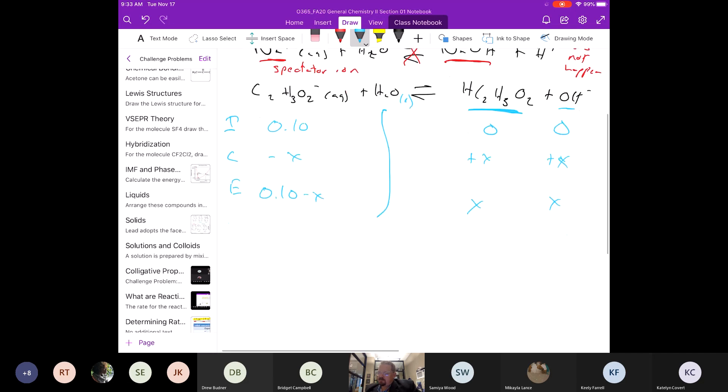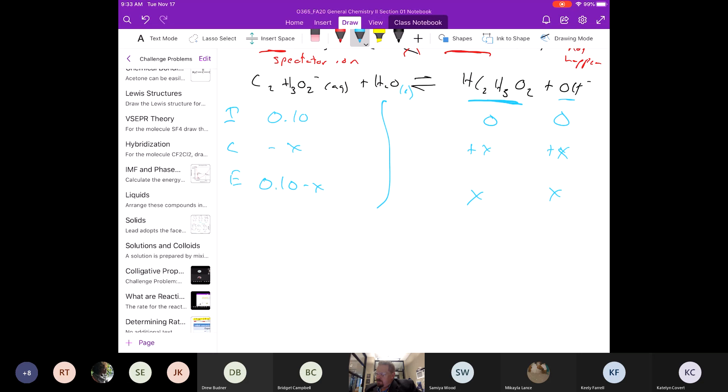If we come down now and we write the K expression for this reaction, that is going to be the concentration of HC2H3O2 times the concentration of OH minus divided by the concentration of C2H3O2 minus. That's the equilibrium expression because we take products over reactants just like we've always been doing.